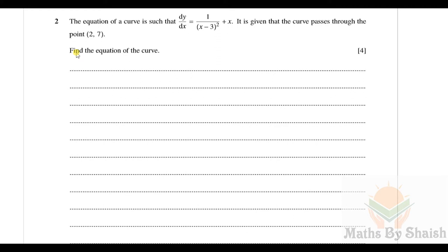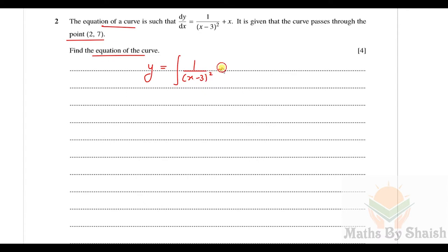Question number 2: the equation of a curve is such that its derivative dy/dx = 1/(x−3)² + x. It is given that the curve passes through the point (2, 7). Find the equation of the curve. Whenever dy/dx is given, we integrate both sides to find y.